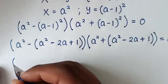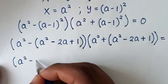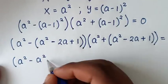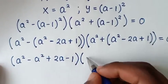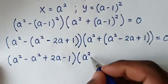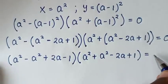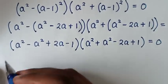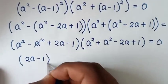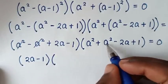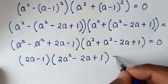In the next step, we open the brackets. In the first factor, distributing the negative: a² minus a² plus 2a minus 1, which simplifies to 2a minus 1. In the second factor: a² plus a² minus 2a plus 1, giving 2a² minus 2a plus 1. So we have (2a minus 1)(2a² minus 2a plus 1) equals 0.